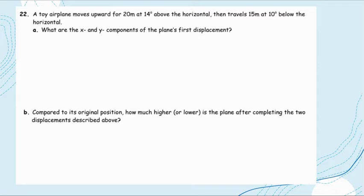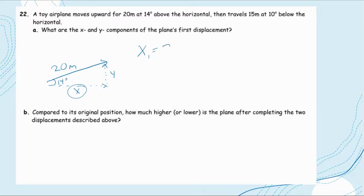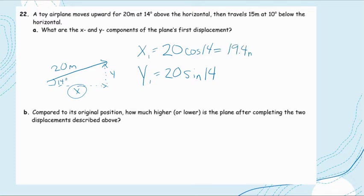Our next question: a toy airplane moves forward 20 meters at 14 degrees above the horizontal, then travels 15 meters at 10 degrees below the horizontal. What are the x and y components of the first displacement? With a 20-meter vector at 14 degrees, x equals 20 · cosine 14 = 19.4 meters, and y equals 20 · sine 14 = 4.8 meters.